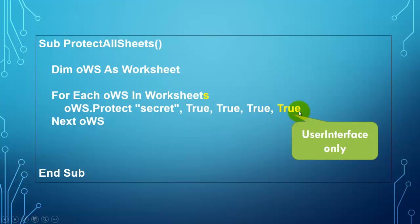But don't forget to add the fifth argument and set that to true. That means user interface only. The user cannot touch any cells. But macros and subroutines still can do their work. Then we tell the user that all the sheets are protected now.